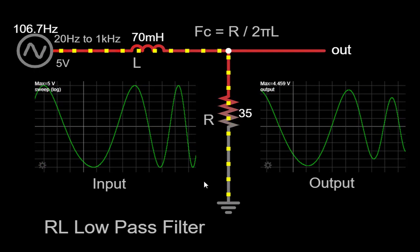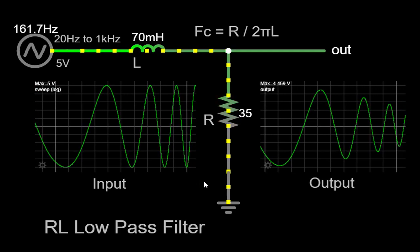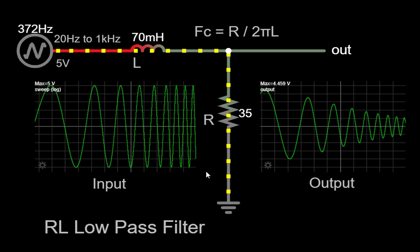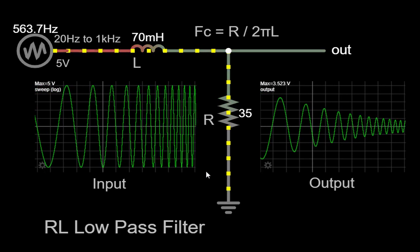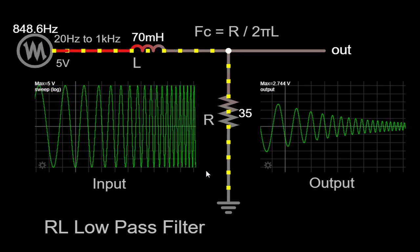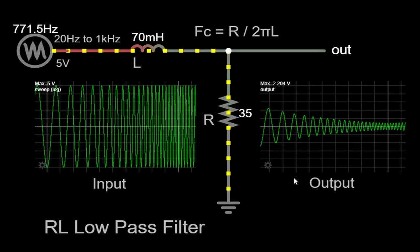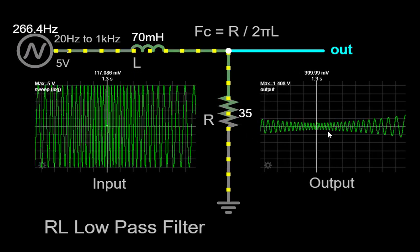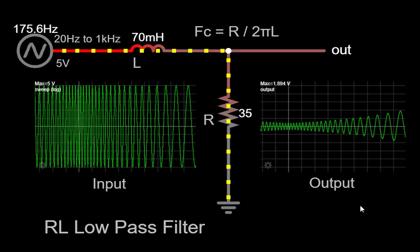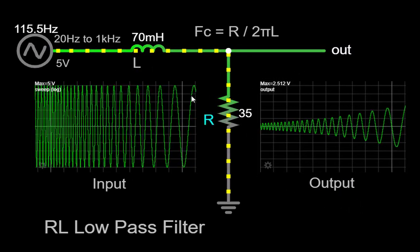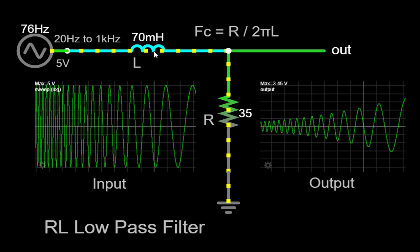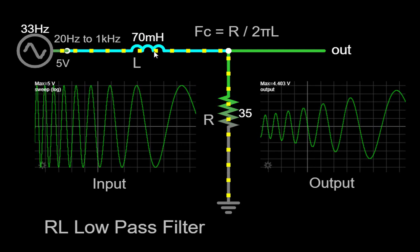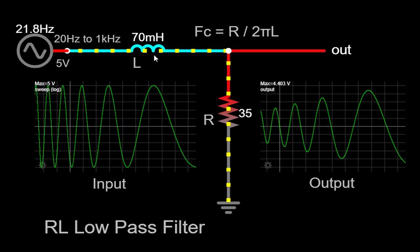As the frequency sweep reaches the cutoff frequency, which in our case is approximately 75.24 Hz, we start to observe a noticeable change in the output waveform. The amplitude of the higher frequency components begins to decrease, indicating the filter's attenuation effect. The inductor's impedance increases with frequency, leading to a greater opposition to changes in current and causing a more significant reduction in the higher frequency components.